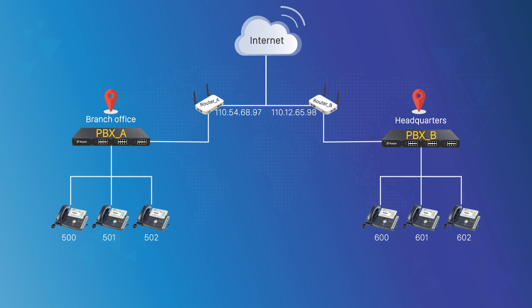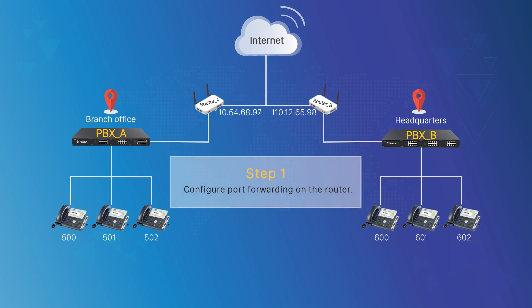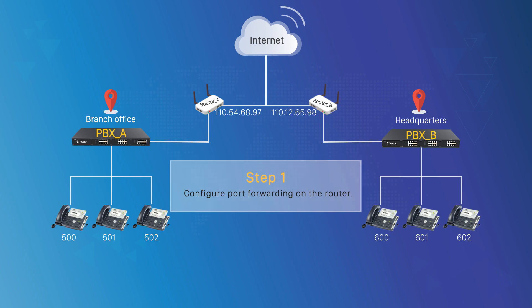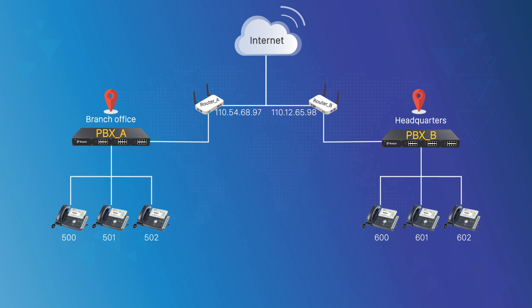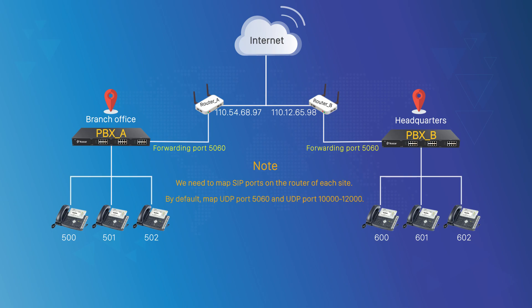Now, let's start the configuration. Since two devices are deployed respectively in two offices, and each side is equipped with a static IP, we need to map SIP ports on the router of each side in advance. To make two facilities reachable, by default, the following ports are required: UDP port 5060, and UDP port 10,000 to 12,000.